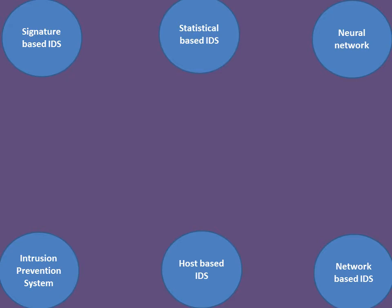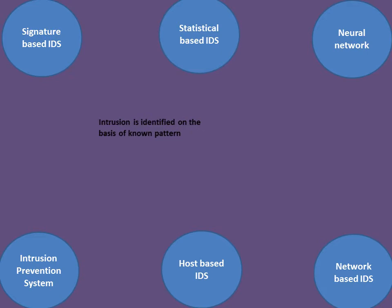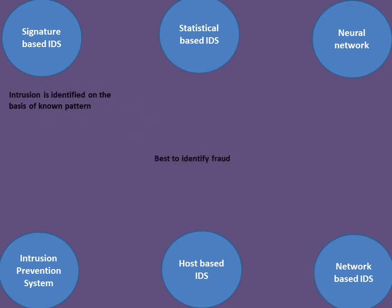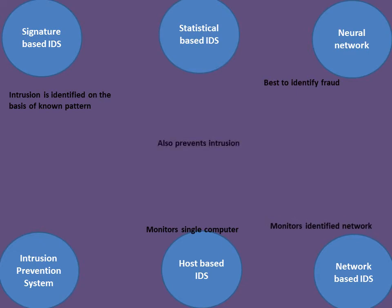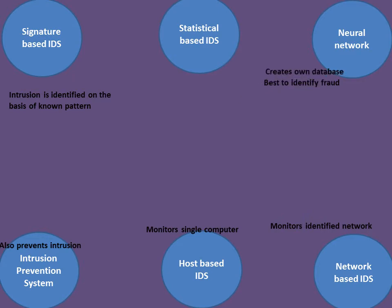Let us recap what we learned: Signature-based IDS identifies intrusion on the basis of known patterns. Neural network is best for detecting fraud. Host-based IDS monitors a single computer; network-based IDS monitors an identified network. IPS also prevents intrusion, as against only recording and monitoring. Neural network IDS creates its own database. Statistical-based IDS generates the highest false alarms.